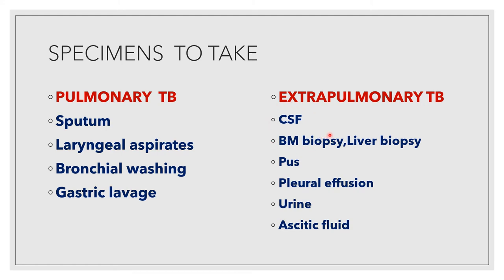In extra-pulmonary tuberculosis, we can take CSF in case of suspected meningitis, bone marrow biopsy, liver biopsy if internal organ tuberculosis is suspected, pus sample from any exudate collection, pleural effusion, urine in genitourinary tuberculosis, peritoneal or ascitic fluid if peritoneal tuberculosis is suspected, and blood sample.